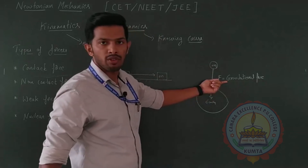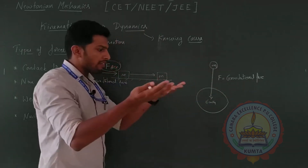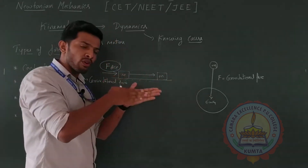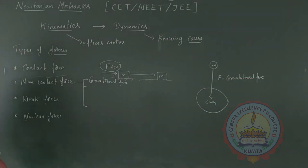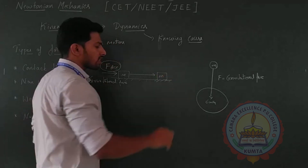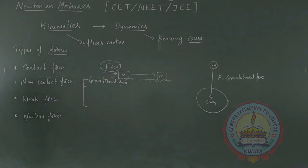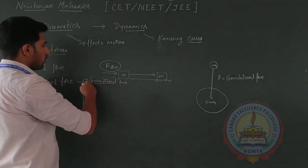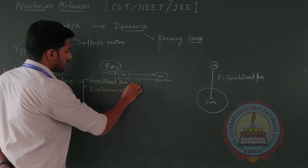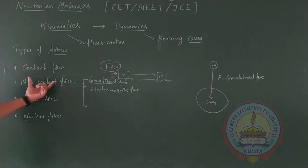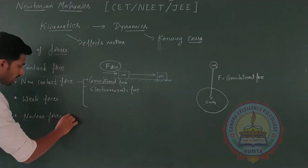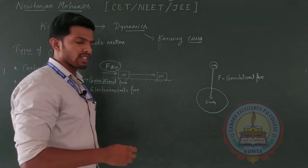When two objects are in contact, the force existing between them is called a contact force. When this object is in contact with a surface, the force existing between the surface and the object is called the contact force. Gravitational force has an entire chapter in first PU physics. After that, we also have electromagnetic force and other types of non-contact forces such as weak forces and nuclear forces, which we will study in second PU physics.